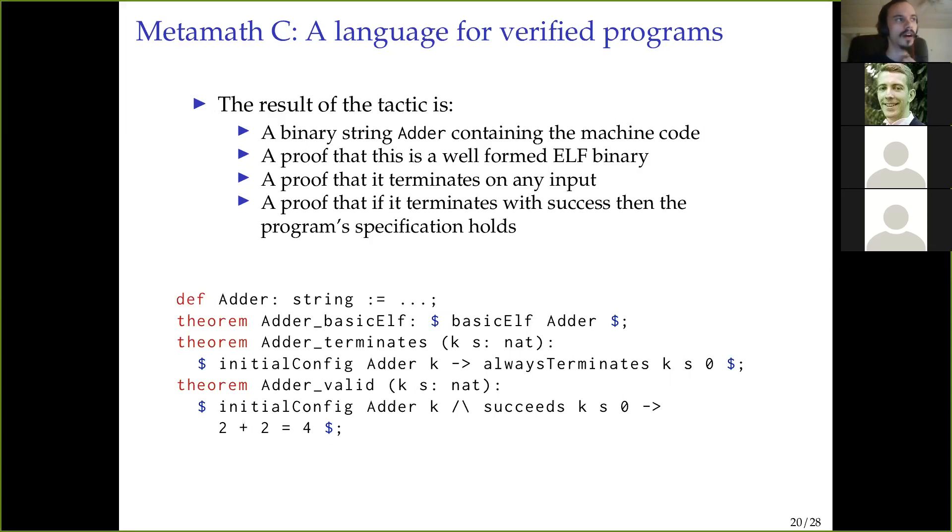There is a question by David Thrane Christiansen. David, will you ask? So I read out the question: why using machine code x86 and not an intermediate verification language, for instance, Boogie? Well, so the intermediate verification language is actually MetaMath C in this setup.